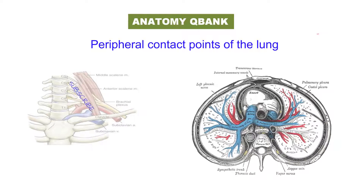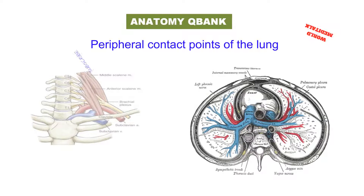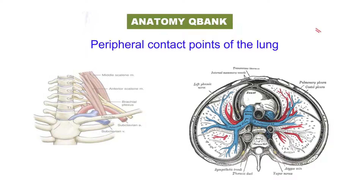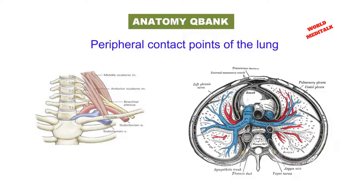The hilum is where the structures which form the root of the lung enter and leave the viscus. These structures are invested by the pleura, which below the hilum and behind the pretracheal impression forms the pulmonary ligament.